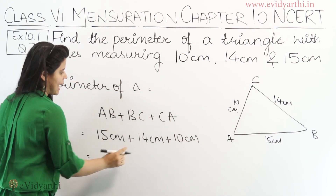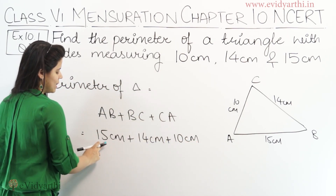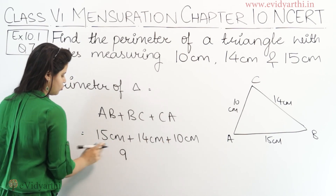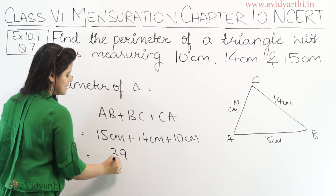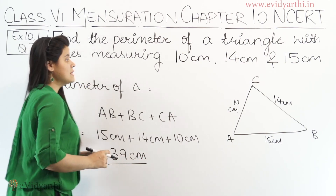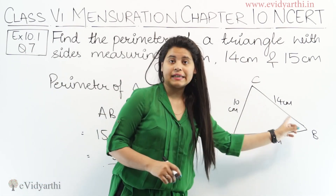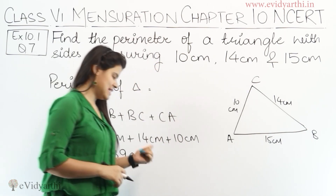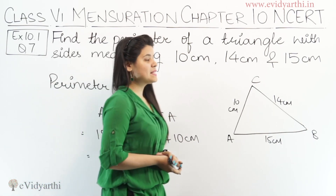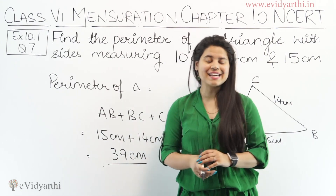So adding these together: 15 plus 14 plus 10 equals 39 cm. The perimeter of this triangle is 39 cm. This was question number 7. Now let's come to the next question.